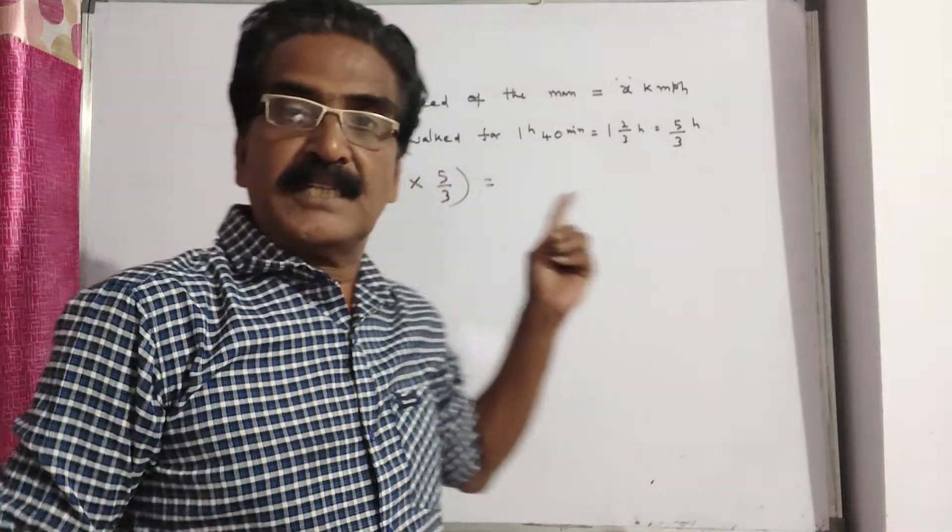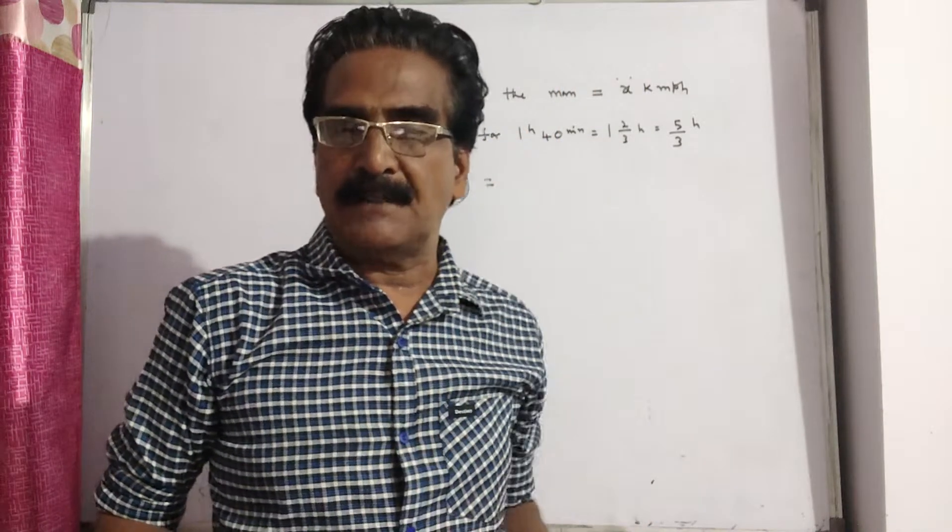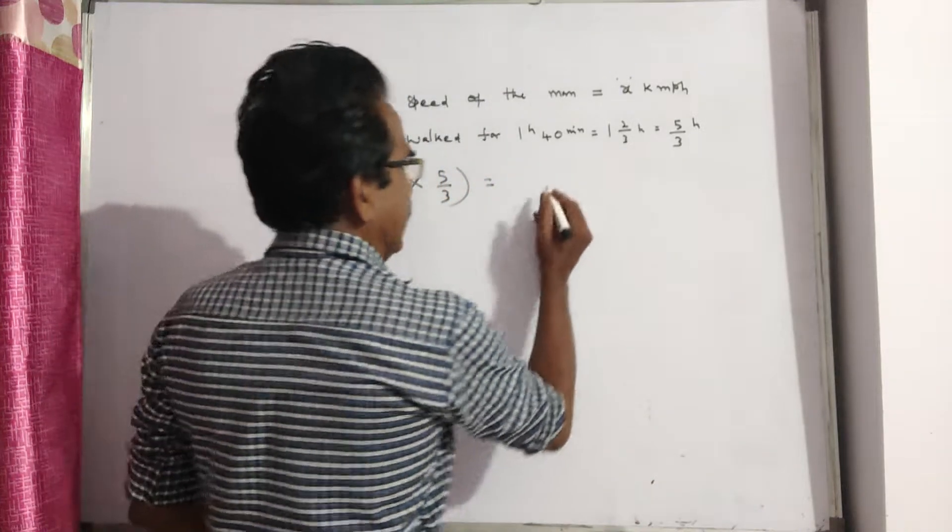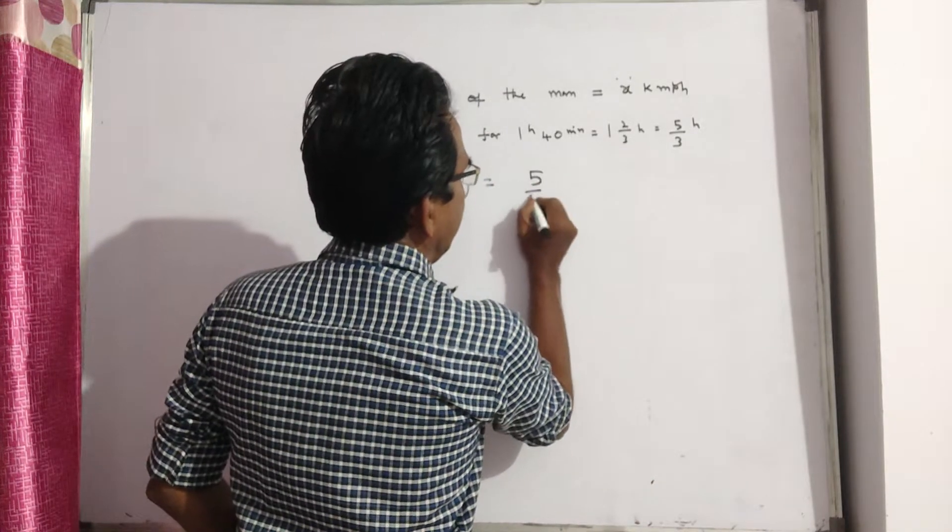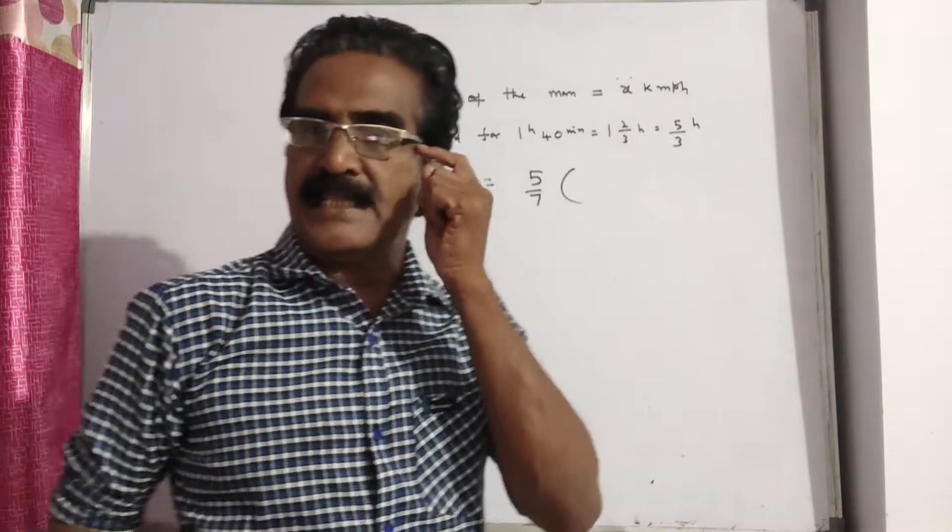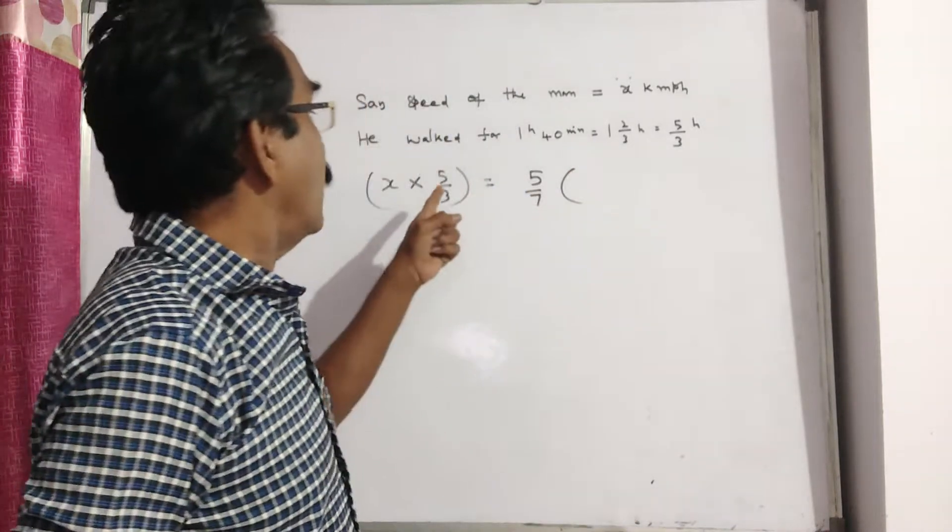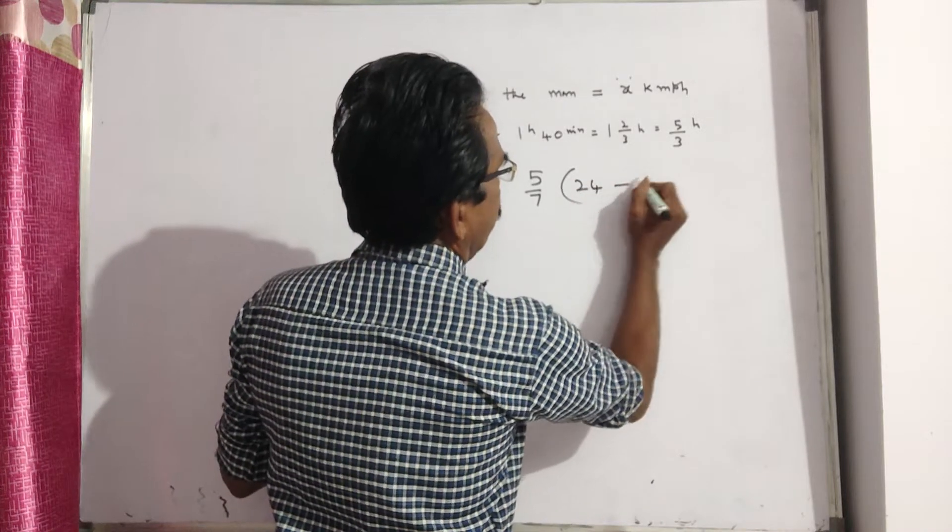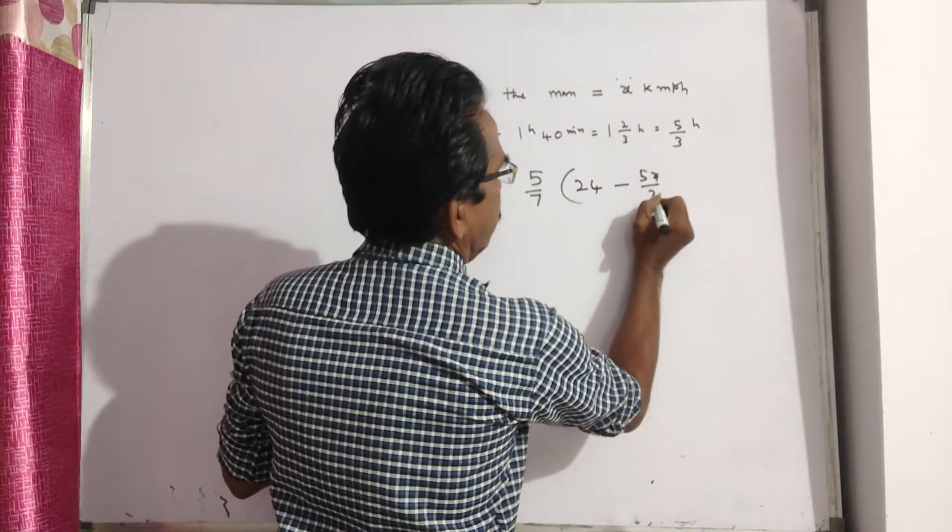What the problem says: the distance covered by him in 1 hour 40 minutes is equal to 5 by 7th of the remaining distance. Total distance is 24 kilometers. He walked 5x by 3, so the remaining distance is 24 minus 5x by 3.